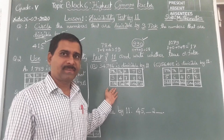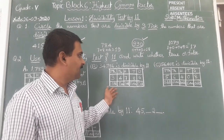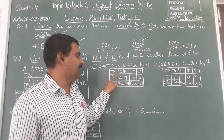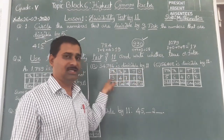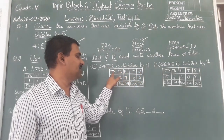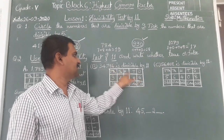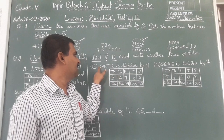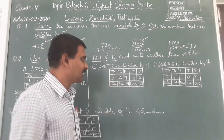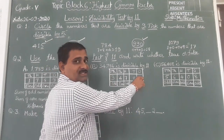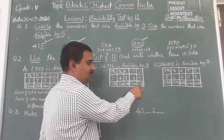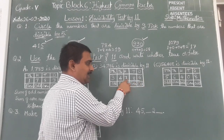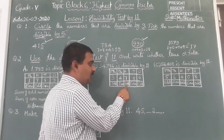Let us see one more: 34,786. Write it in the place value chart. 1's place is 6, 10's place is 8, 100's place is 7, 1,000's place is 4, 10,000's place is 3. 1st place is odd, 2nd is even, 3rd is odd, 4th is even, 5th is odd.